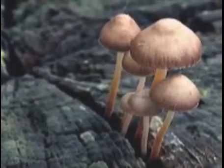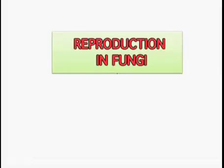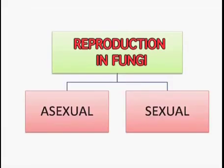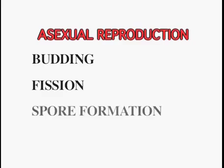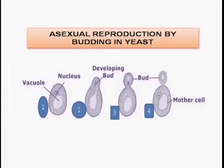Yeast is a very good example of saprophytic fungi which can absorb glucose. Reproduction in fungi is both asexual and sexual. Asexual reproduction is by budding, fission, and spore formation. In budding, a bud appears, grows in size, a constriction appears, and it detaches itself from the mother cell and leads an independent existence. In fission, a break in the body appears and the two parts separate from each other.